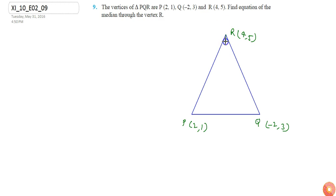Here the median through the vertex R will be this one, and let's say the midpoint of PQ is X. So first we need to find out the value of point X. Point X will be (x,y).